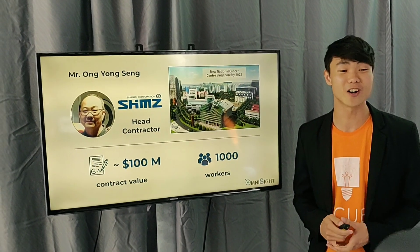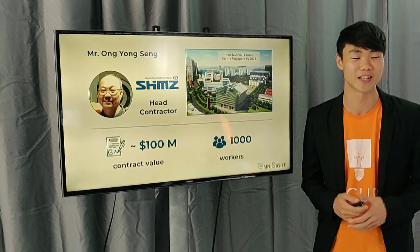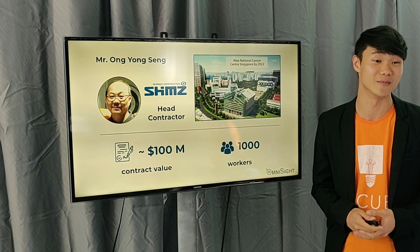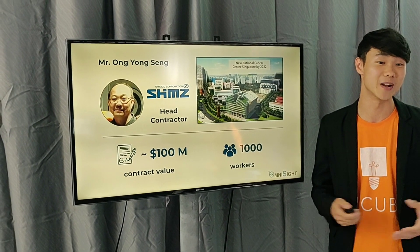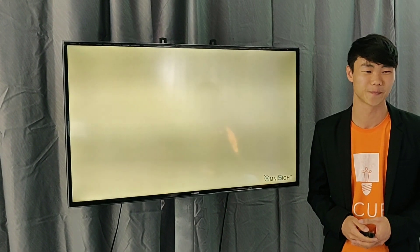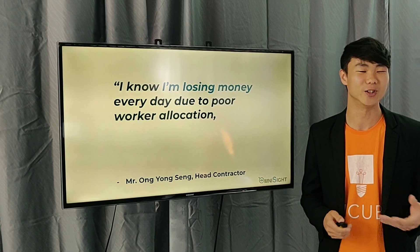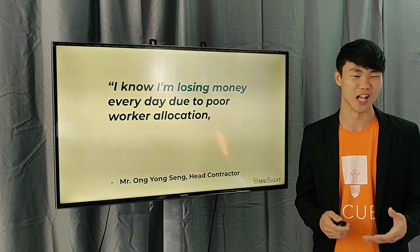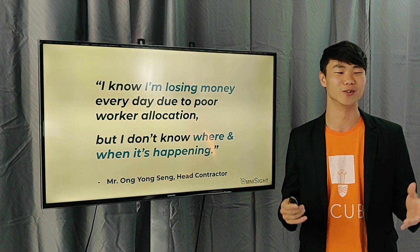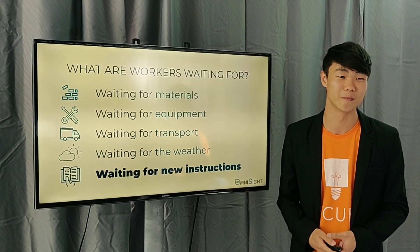We spoke to Mr. Ong, a head contractor at Shimizu Corporation. His average contract value is $100 million and he manages a thousand workers, so he knows this problem very well. He said: I know I'm losing money every day due to poor worker allocation, but I don't know where and when it's happening. That's a very scary problem.